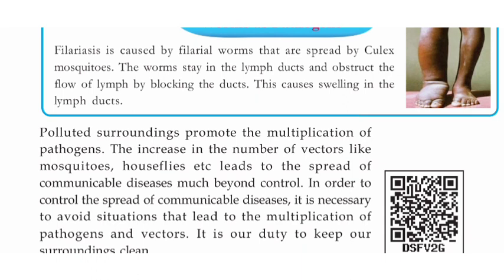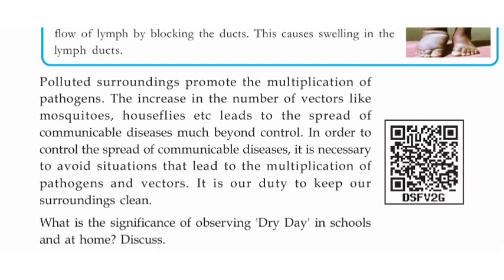Polluted surroundings promote the multiplication of pathogens. The increase in the number of vectors like mosquitoes and house flies leads to the spread of communicable diseases much beyond control. In order to control the spread of communicable diseases, it is necessary to avoid situations that lead to the multiplication of pathogens and vectors. It is our duty to keep our surroundings clean.